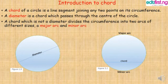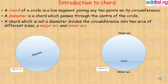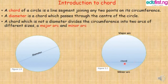Introduction to chord. A chord of a circle is a line segment joining any two points on a circumference. This is an example here — this line is called a chord because it is joining two points on the circumference. This is the first point it is joining and this is the second point on the circumference.